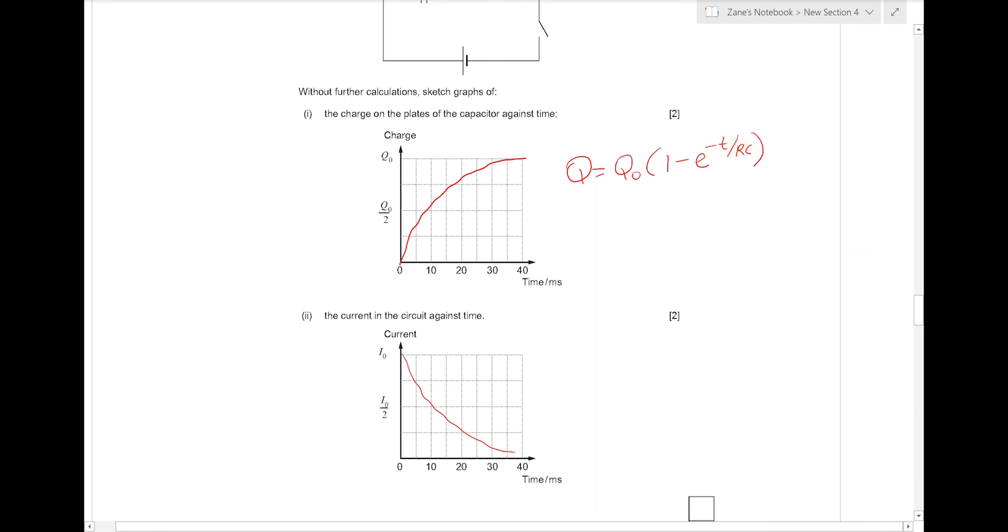In one time constant, the charge built up will be roughly 63% of the maximum charge. So what we need, as I've already drawn here, is a line with a positive gradient, but that gradient decreases. And after 15 or so ms, then we're looking at something like 63% charged.